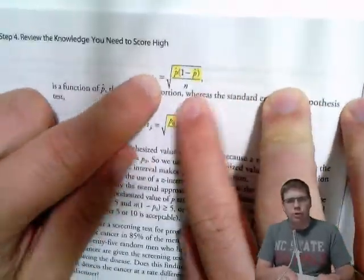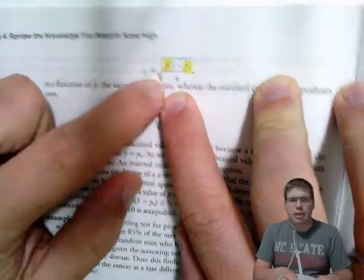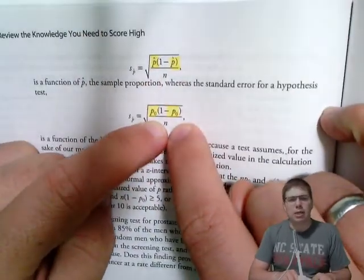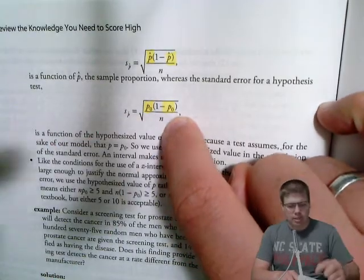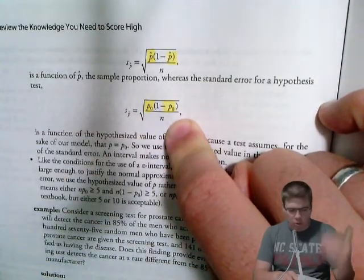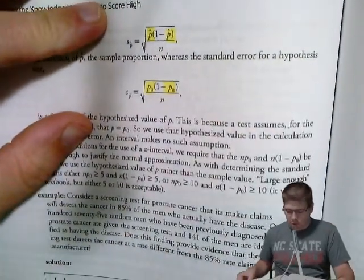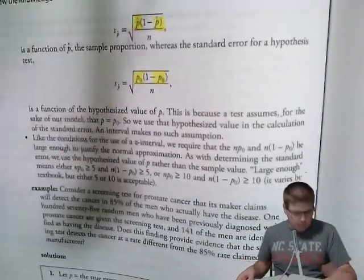When you were doing a confidence interval, you didn't have a p-naught, you didn't have an assumed p-value, so we just used p-hat instead. Here we should use p-naught. We have that null hypothesis. That's what we're assuming p is for this problem, so we work the problem with that assumption.